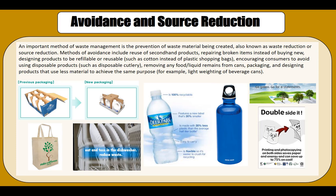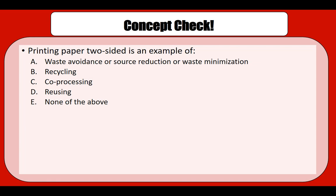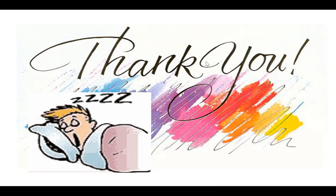Are you using one-time-use products or reusable ones? Are you buying a lot of packaged material? Are you able to bring reusable grocery bags to the store? These are all questions we need to ask to start thinking about ways to reduce our waste. Waste avoidance and source reduction is extremely important. As a quick concept check: printing paper two-sided is an example of waste avoidance, source reduction, or waste minimization. That concludes our lecture for now.